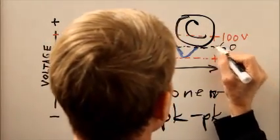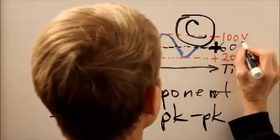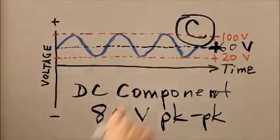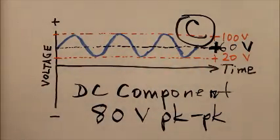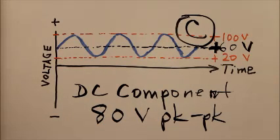So it is plus 60 volts. Can you see that plus sign there? Plus 60 volts is the DC component. But again, here, we're asking about the peak-to-peak voltage and that is 80 volts, choice C.